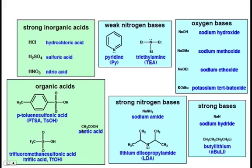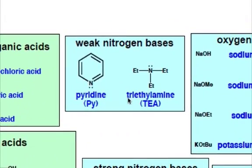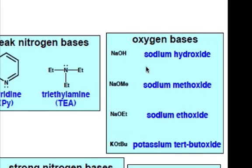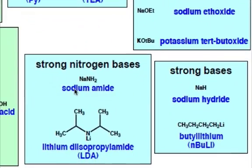Some bases that get added: there are weak nitrogen-based bases such as pyridine or triethylamine. Some oxygen bases include sodium hydroxide, sodium ethoxide, or potassium tert-butoxide.